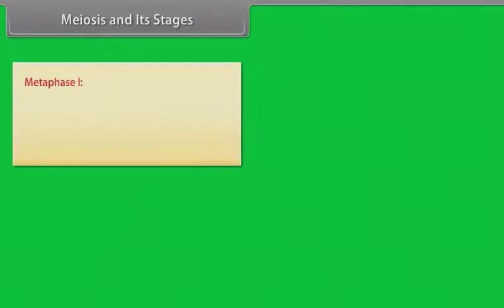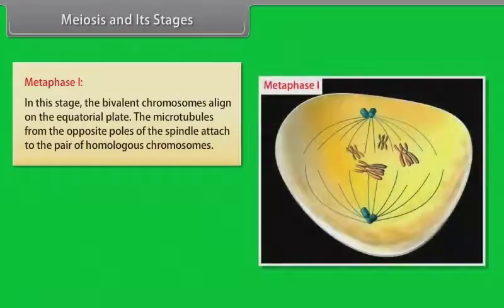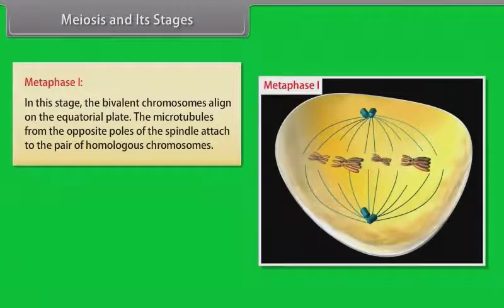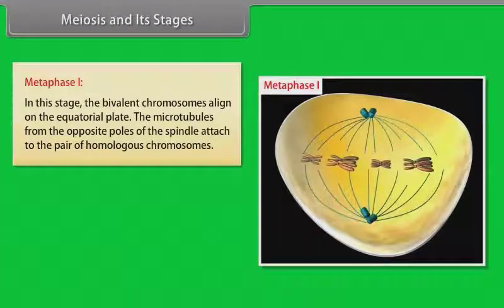After completion of prophase 1, metaphase 1 takes place. In this stage, the bivalent chromosomes align on the equatorial plate. The microtubules from the opposite poles of the spindle attach to the pair of homologous chromosomes.